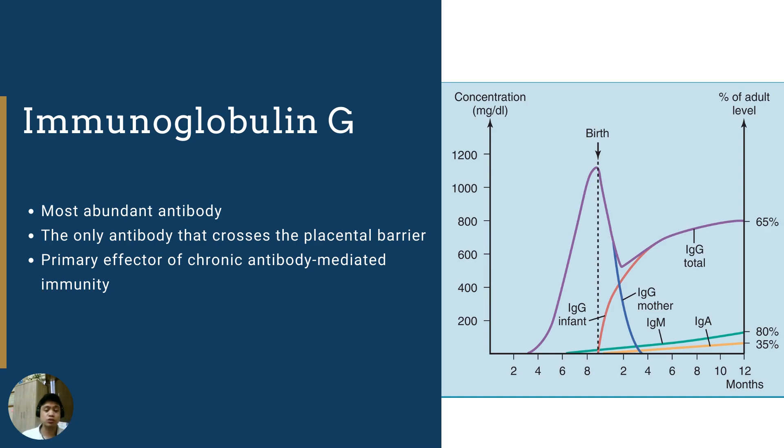Let's take a quick look into the different types of antibodies. Immunoglobulin G, short-handed as IgG, is the most abundant antibody. It is the only antibody that is able to cross the placenta, which means that IgG produced by the mother is able to cross the placenta and interact with the fluids of the fetus. It is the primary effector of chronic antibody-mediated immunity, which means that the long-standing protection from infection that we receive from prior infection or from vaccination is conferred by immunoglobulin G.